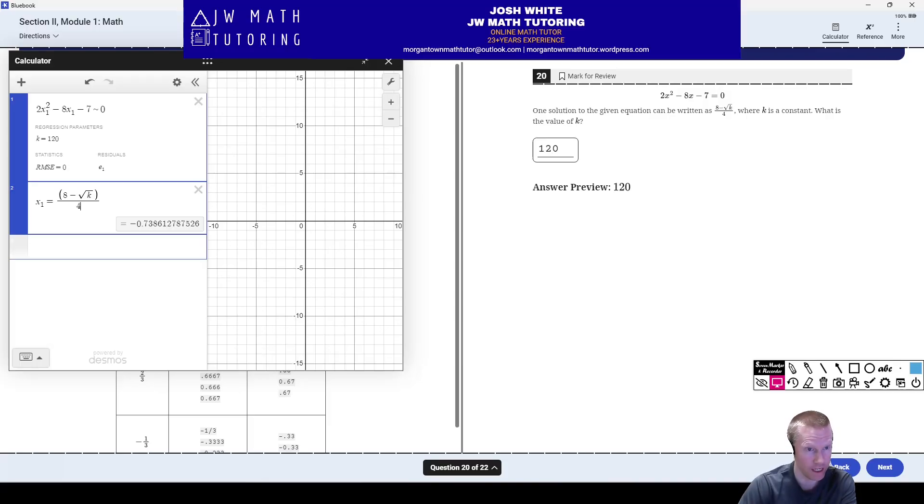So right there, it gives you 120 and that's your answer. That's how you could do this entire problem or any of these quadratics where it gives you the equation and it says the one solution is of the form something plus square root k over something, anything like that. This is how you can do it entirely in Desmos.